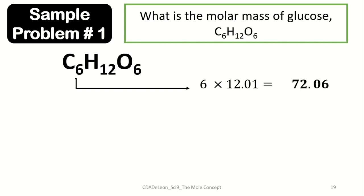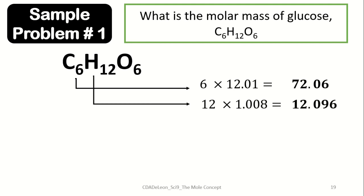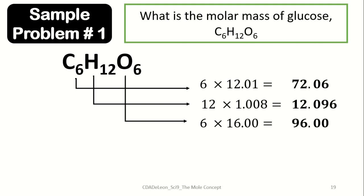Hydrogen has 12 atoms, so 12 multiplied by 1.008 is equivalent to 12.096. And oxygen also has six atoms multiplied by its atomic mass of 16, which is equivalent to 96. Getting the sum of these atomic masses is equivalent to 180.156 grams per mole. Note that we use grams per mole since we are referring to the molar mass.